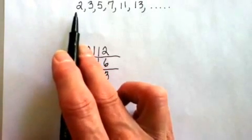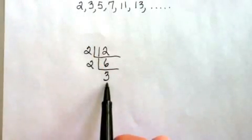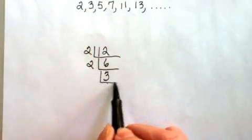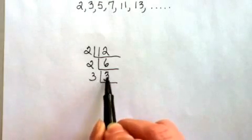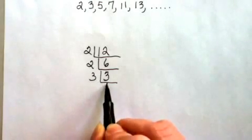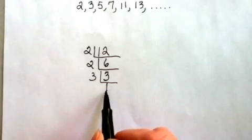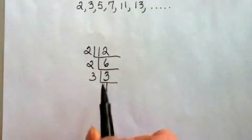So now I go to my next prime number. Does 3 divide by 3? Yes it does. 3 divided by 3 is 1. And when you've reached an answer of 1 we know we have completed our problem.